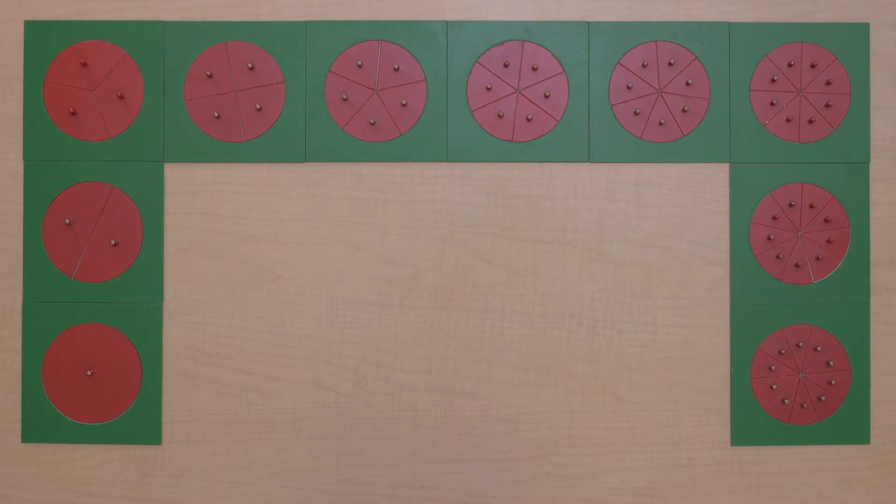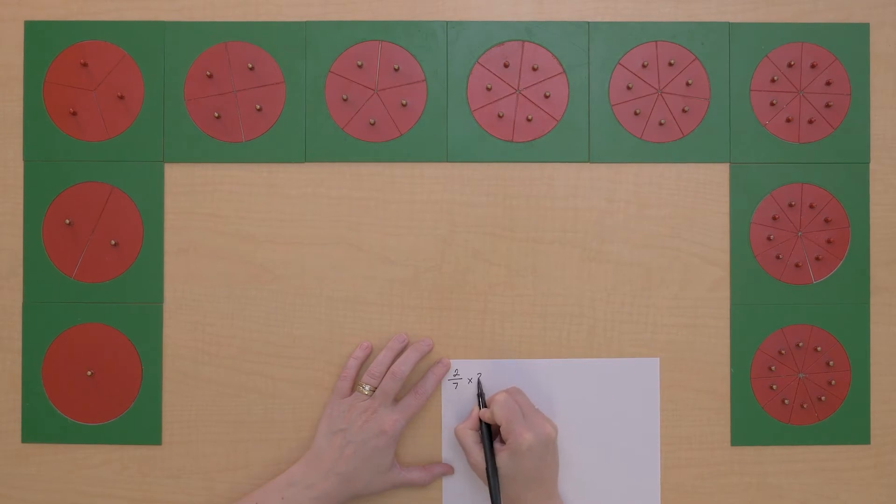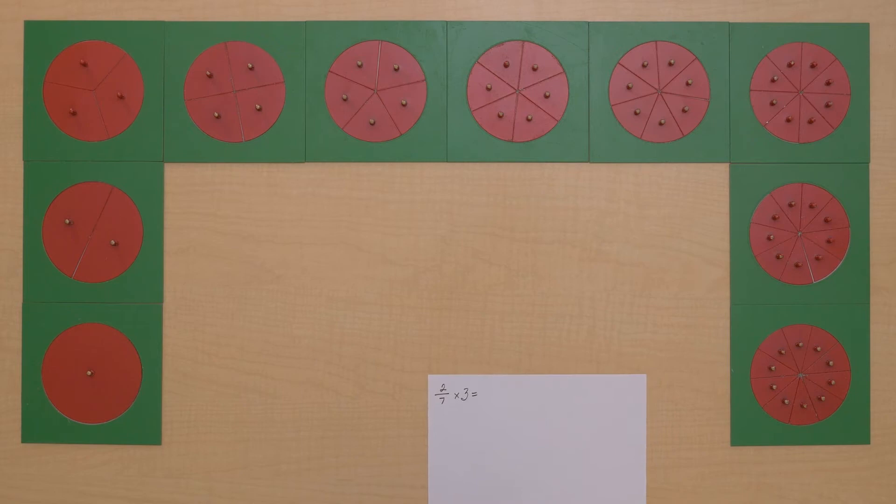Let's do another one. Let's do 2/7 times 3. And this one I'm going to write down. So I'll write 2/7 times 3. Now let's get that.